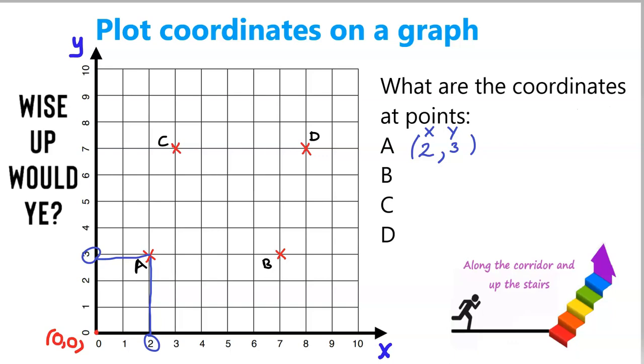If you wrote it down the other way around, it's completely different. (3, 2) is not where A is. (3, 2) is actually here.